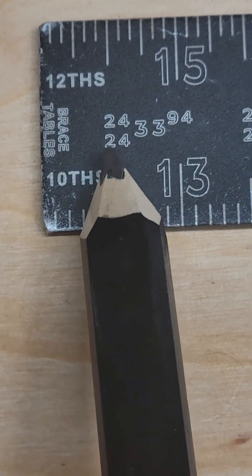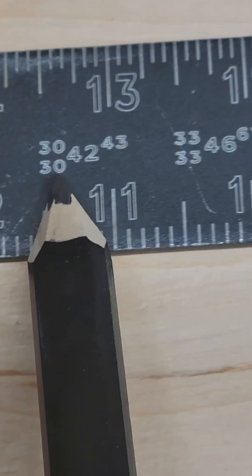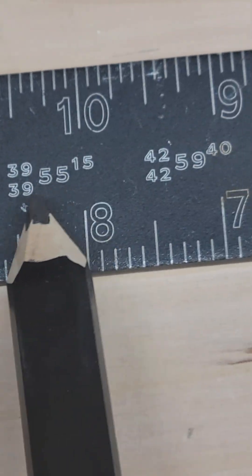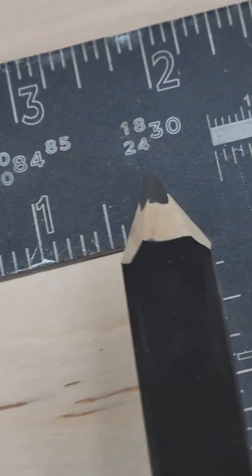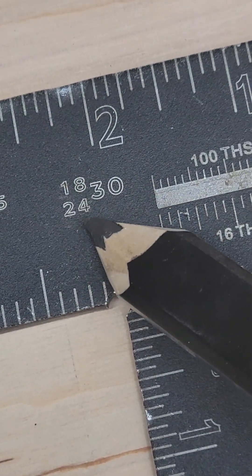These are your brace tables. You're going to have one, two, three, four, five, six, seven, eight, nine, ten, eleven, twelve, thirteen. And what is this right here?